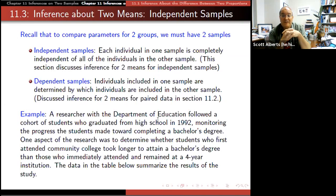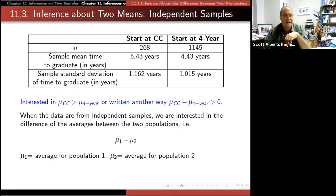But the question is, is that difference really significant, or is it close enough that you can't really tell? So here's the summary data that we have, and you can see that there is, in fact, a difference between those who started at a community college and a four-year school, 4.43 years versus 5.43 years.